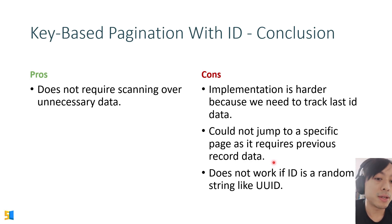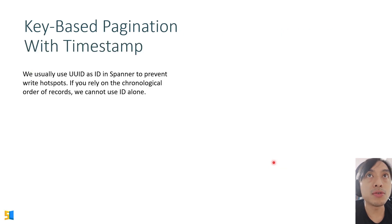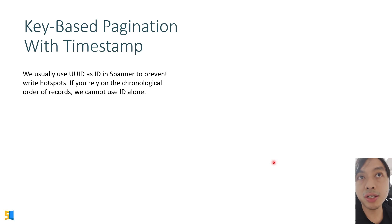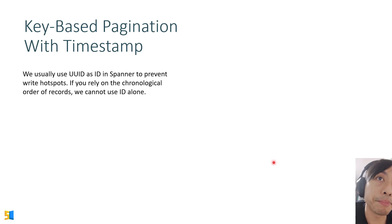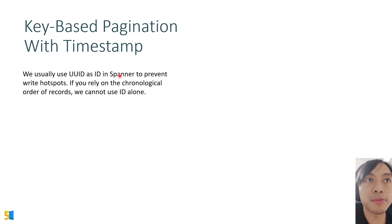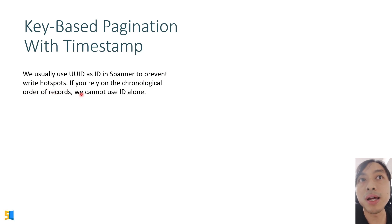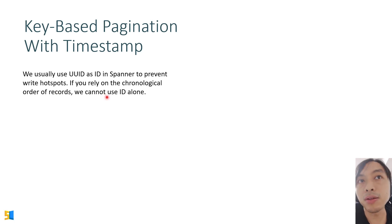For that case we use the third method: key-based pagination with timestamp. We usually use UUID as ID in Spanner to prevent write hotspots, and if we rely on the chronological order of records we cannot use ID alone.